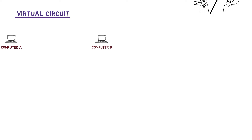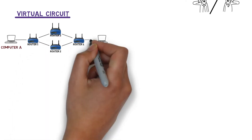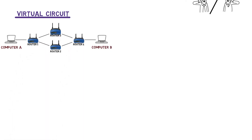So now, router 1 knows that if it receives a packet which belongs to circuit 7, it has to pass it to router 3. Router 3 knows that if it receives a packet from circuit 7, it passes it on to router 4, and so on. The route does not change for each packet and is determined for the entire session, just like in physical circuit networks.